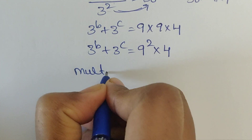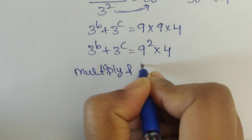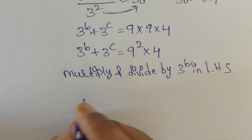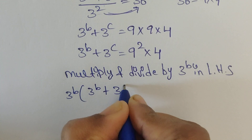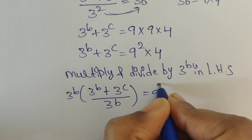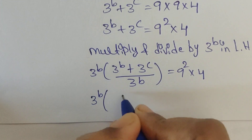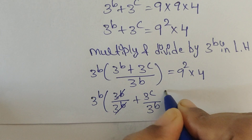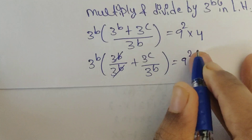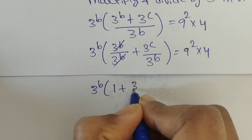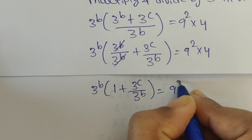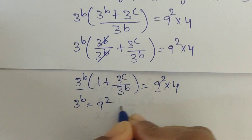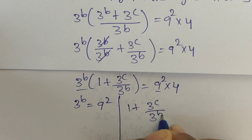Again multiply and divide by 3 power b in LHS. So 3 power b plus 3 power c divided by 3 power b: here 3 power b divided by 3 power b gets cancelled, equal to 9 squared times 4. So now 3 power b times 1 plus 3 power c divided by 3 power b equal 9 squared times 4. Now split this factors as 2 parts: first one is 3 power b equal 9 squared, and the other one is 1 plus 3 power c divided by 3 power b equal 4.